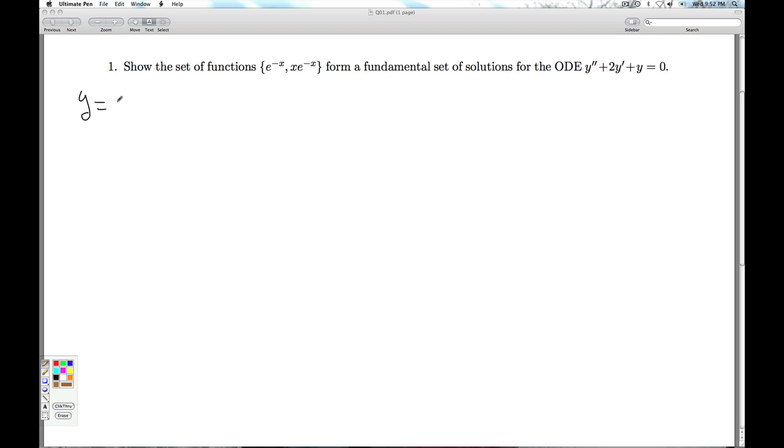Now we look at the second function here, xe to the minus x. I take the derivative here, I get e to the minus x minus xe to the minus x. And I can factor out the e to the minus x there and get (1 minus x)e to the minus x.